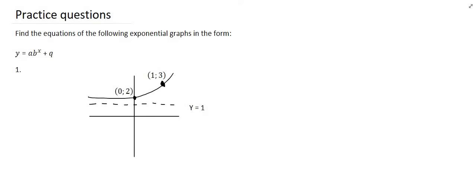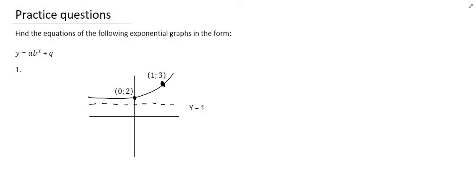Let's try some examples. So number one, we're finding the equation in the following form. Notice that there isn't the plus P next to the X, meaning that this graph hasn't shifted left or right. So the first thing we're going to do is fill in our asymptote, which has a value of one. That'll be your Q value. So let's do that.